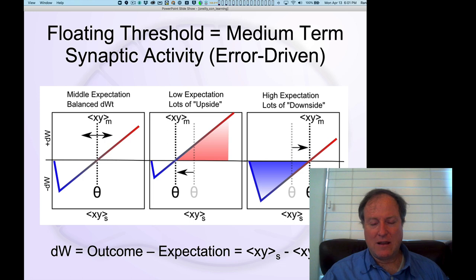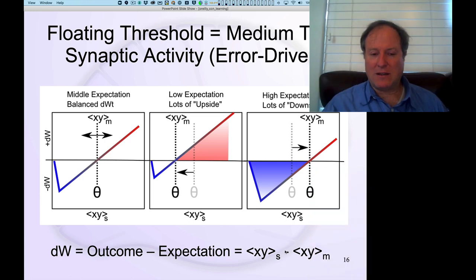That minus phase, that guess of what the network itself came up with, that actually directly ends up computing outcome minus expectation, or short-term minus medium-term, or plus phase minus minus phase. All of those things are different ways of saying this basic same equation.